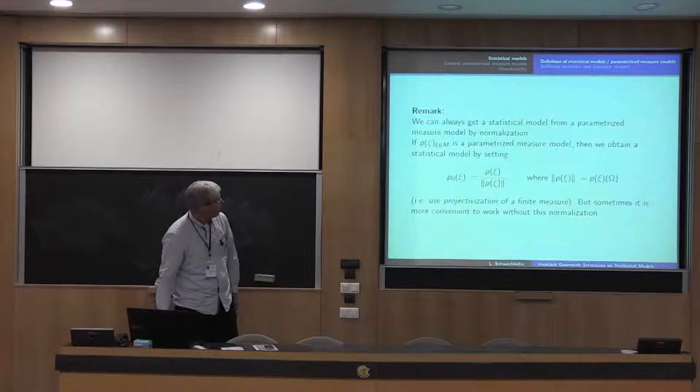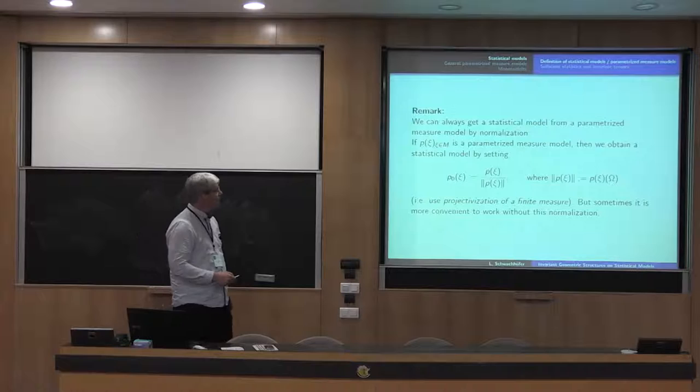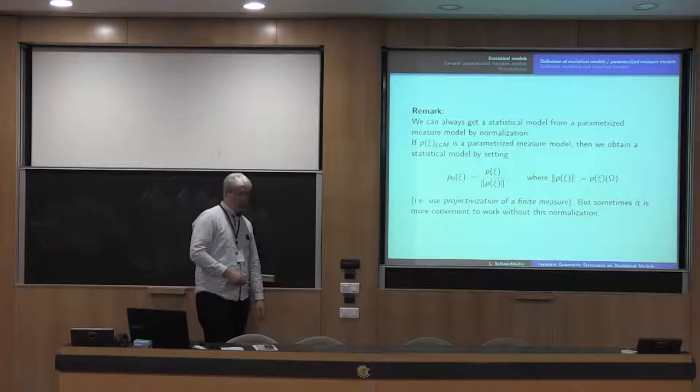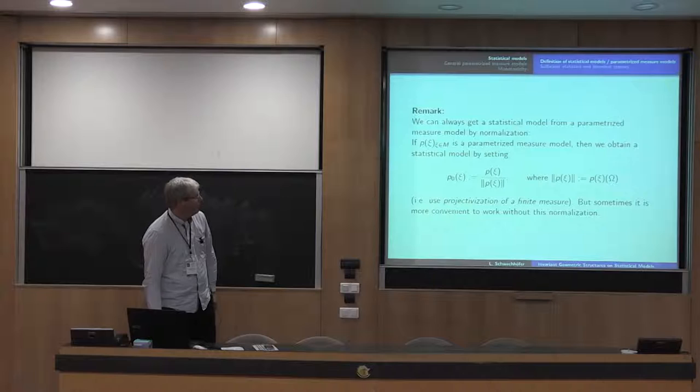The difference between statistical and parameterized measure models is not really big — it's more or less a matter of convenience. If you have a parameterized measure model, you can always normalize it and get a statistical model. Statistical models are just special cases, so it's essentially the same information.